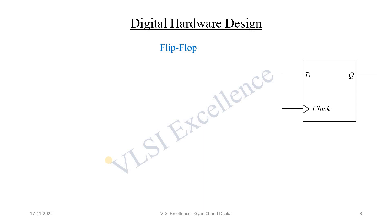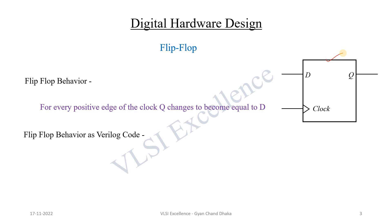Now let's see how we can specify sequential logic in Verilog, taking a flip-flop as an example. First let's understand the behavior of a flip-flop in English: for every positive edge of the clock, q changes to become equal to d. At every positive edge of the clock, q is going to change its value to equal d. This is the behavior of this flip-flop in English.